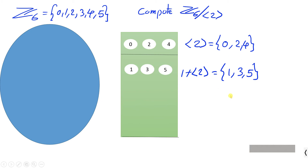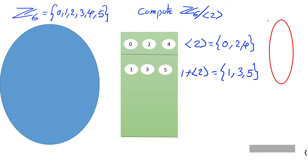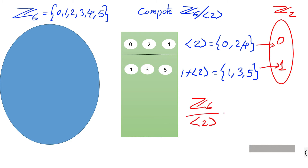Since there are no elements left in G that do not belong to any of the cosets, there are only two cosets. We conclude that this factor group is isomorphic to Z2, and we can find a mapping from this factor group to Z2.